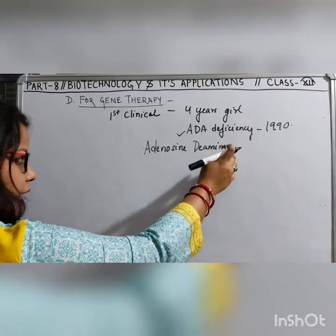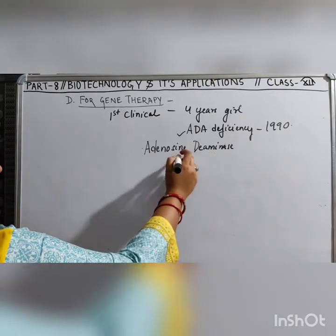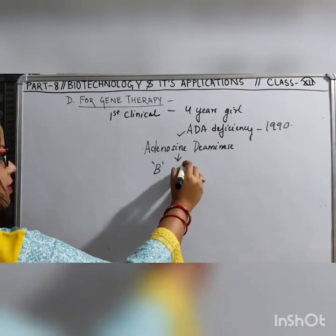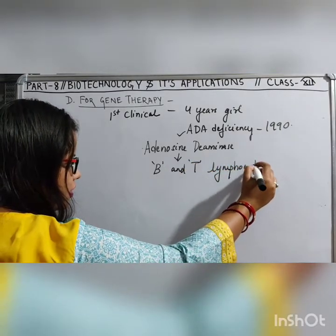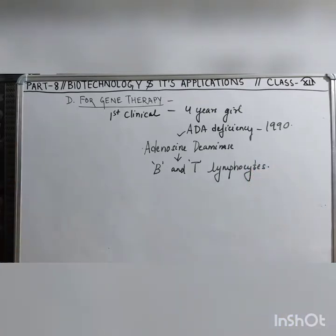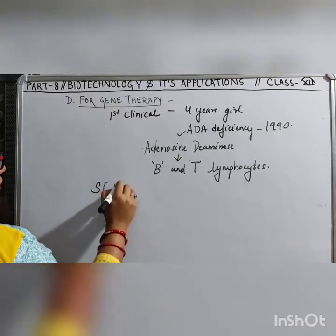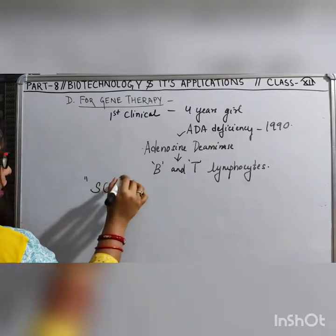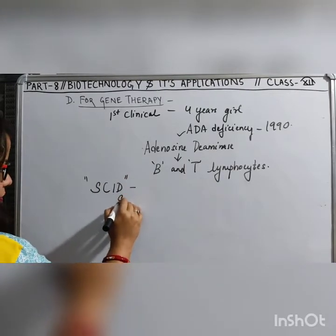Since ADA ends with '-ase,' that means it is an enzyme. This enzyme is responsible for the formation of B as well as T lymphocytes. ADA deficiency results in a condition called SCID.